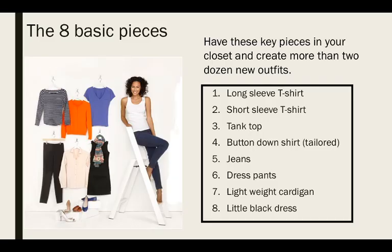So we're going to build our wardrobe. There are eight basic pieces of clothing, and these are key pieces that you should have in your closet. And you can use them to create more than two dozen different outfits. So they are a long-sleeved t-shirt, a short-sleeved t-shirt, a tank top, a button-down shirt that's typically tailored, jeans, dress pants, lightweight cardigan, a little black dress. If you're a man, it's going to be a suit. So these are super important, and you should definitely have them. When I talk about these, they don't have to be in the neutral spectrum of colors. They just need to be playing with your personal coloring and your yin and yang balance. So think about that as well.